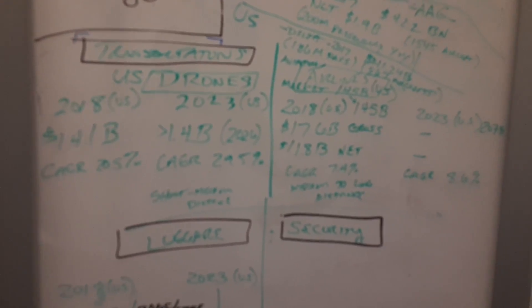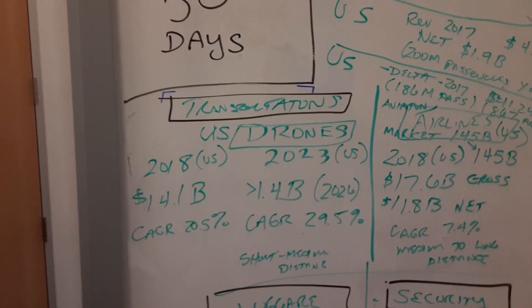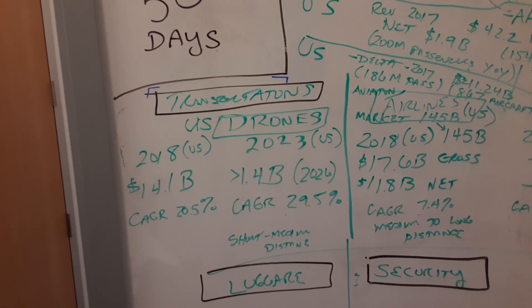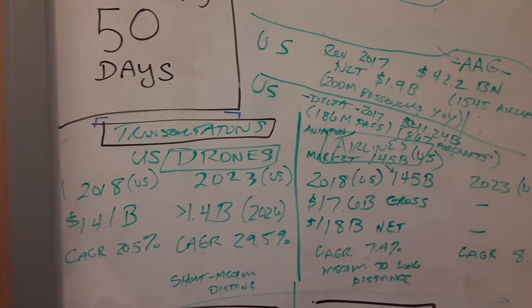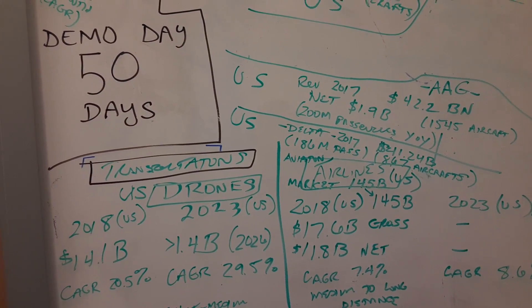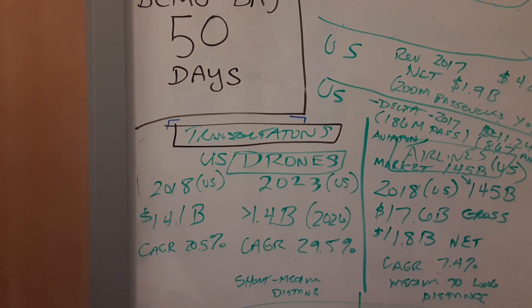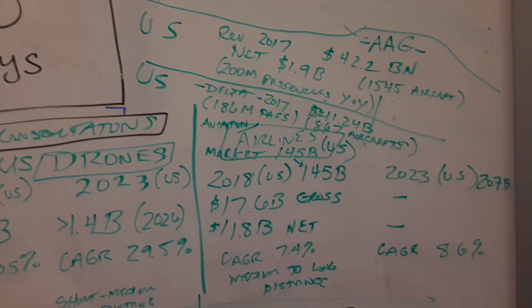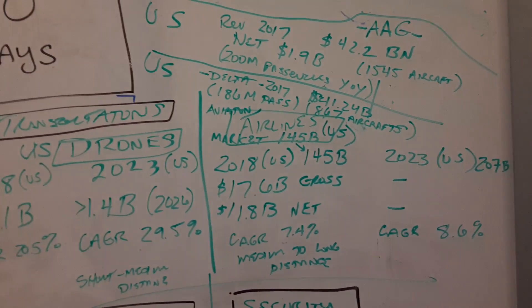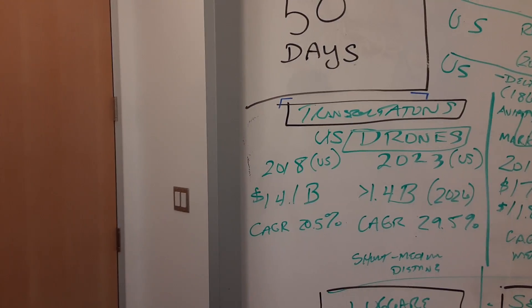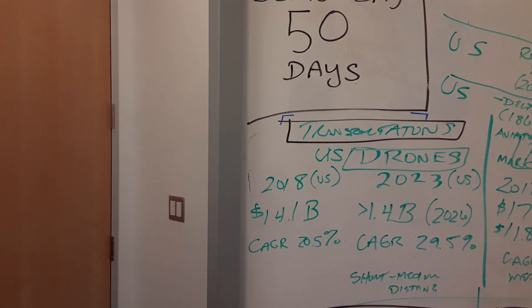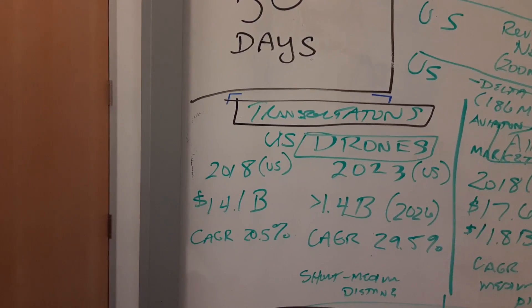Transportation we broke down to two categories: the US passenger drone market and the US airline market. Both are aviation flight forms of transportation. One heavily exists, the airline. The other somewhat exists, definitely being fueled by research and development with a target date of 2023 launch.